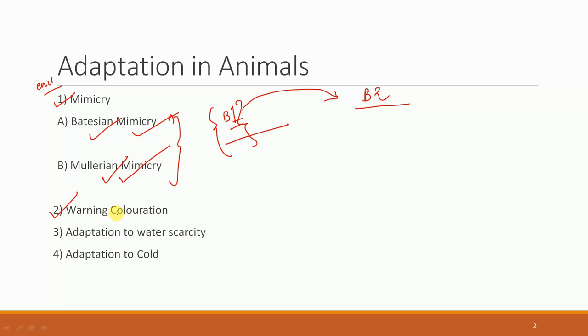Also, even if the animal is not poisonous, it might be mimicking another animal which is poisonous. It can be a type of Batesian mimicry also. So this is another type of adaptation.